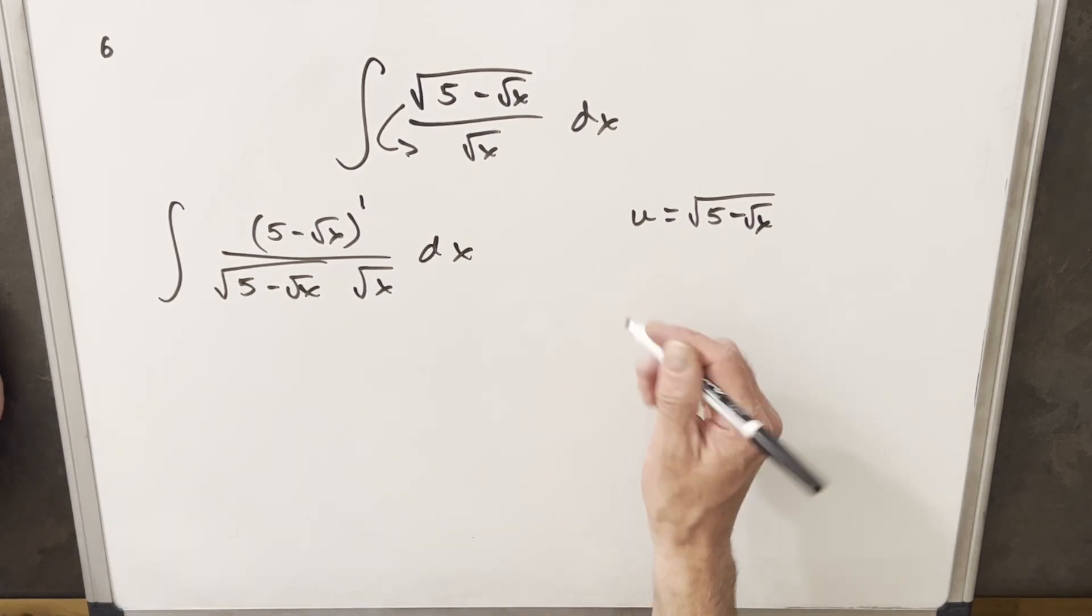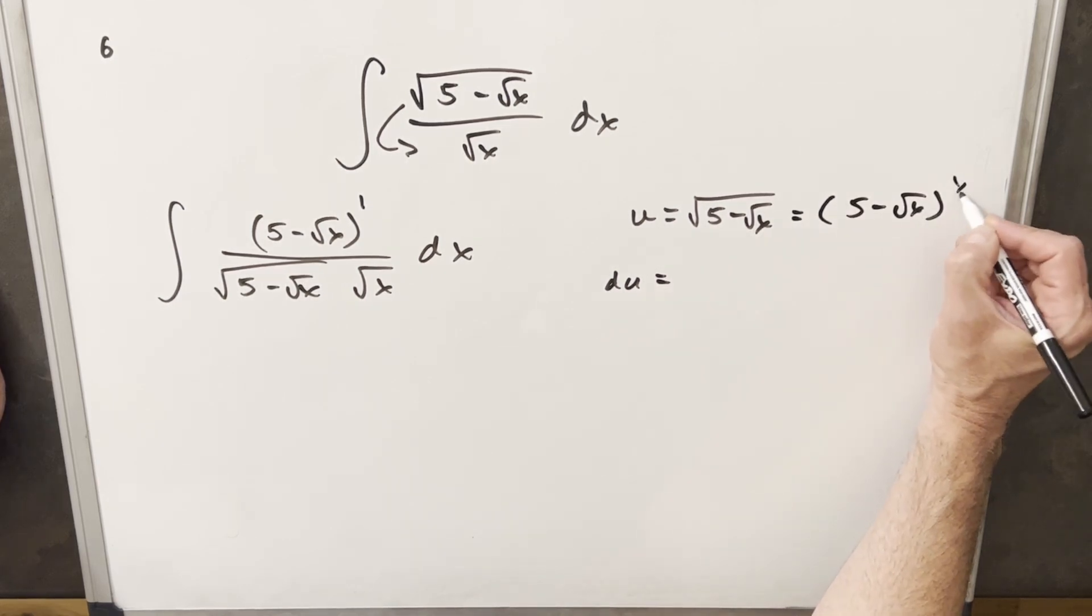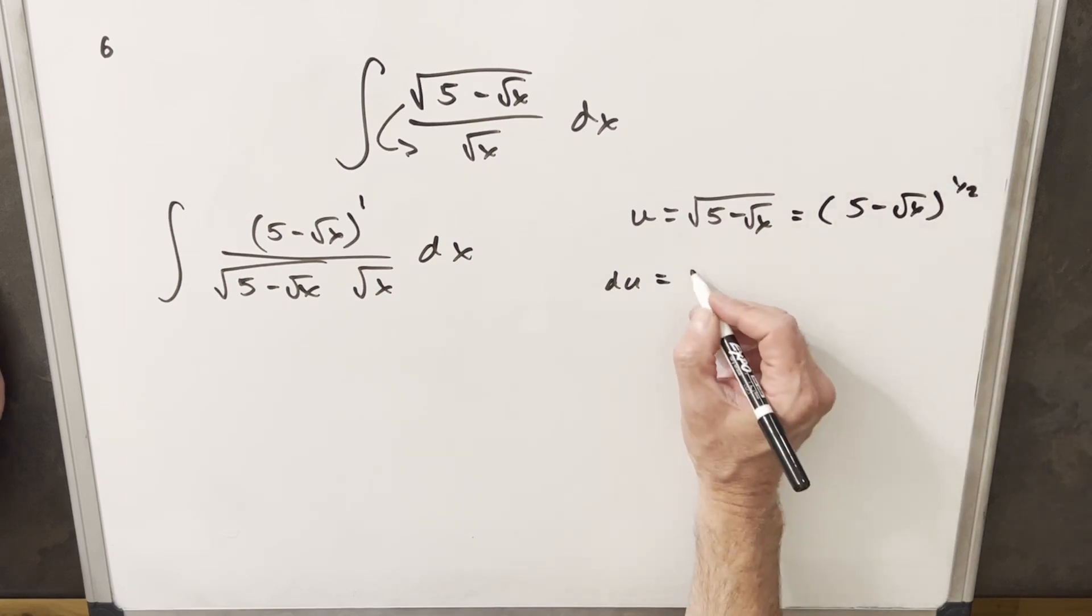And you could square this now and solve for x. But what I want to do is I'm just going to take my derivative the way it is right here. And just keep in mind that this can be written like this with the half power. So we'll first use the power rule.